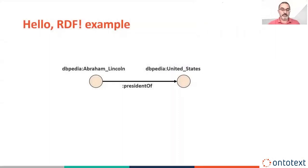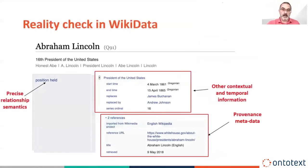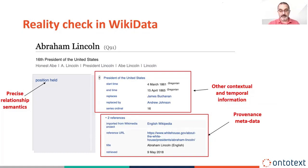To start with, a hello-world RDF example. If you want to encode the information that Abraham Lincoln was president of the United States, that's a very easy way to do it. You have two nodes and one relationship, one edge labeled 'president of.' You can have a slightly more advanced version having labels or names for the two nodes. But the reality check says you have to be able to do much more than this — you need to provide contextual temporal information as well as provenance metadata, so that you have all the important information about this fact and this edge.